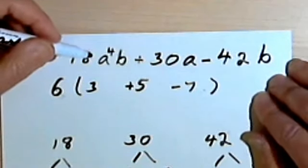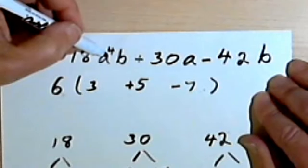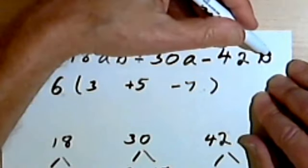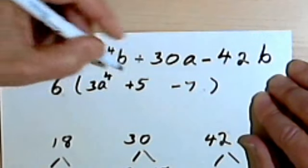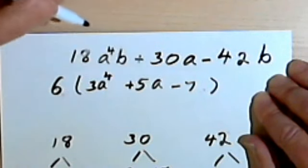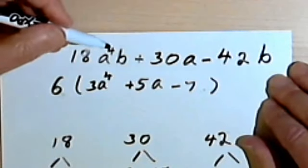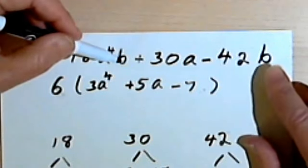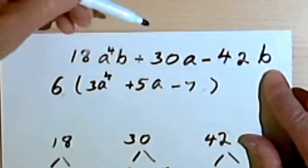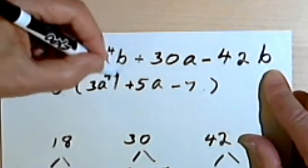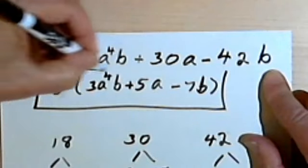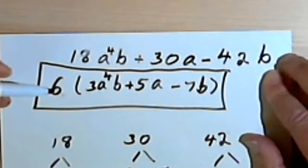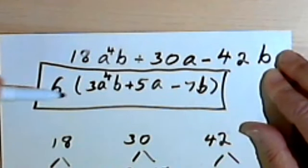And now let's look at the variables. I've got a to the 4th, a... but no a here, so I can't factor the a's out. So this will go back to being a to the 4th, and this will be an a. Let's look at the b's. I've got a b here and a b here, but no b in the middle, so I can't factor the b's out either. So this then is going to be my factored version. As it turns out, the only thing I could factor out of this was the 6.